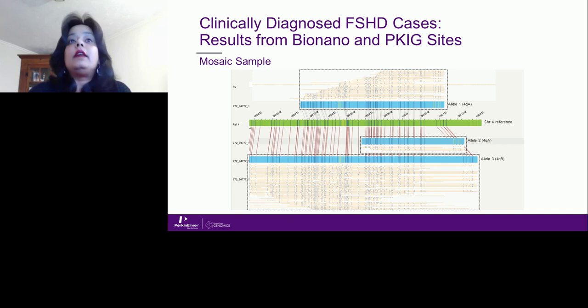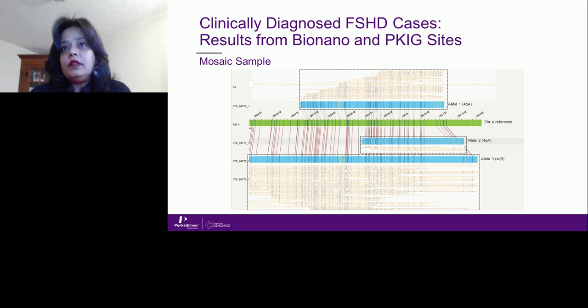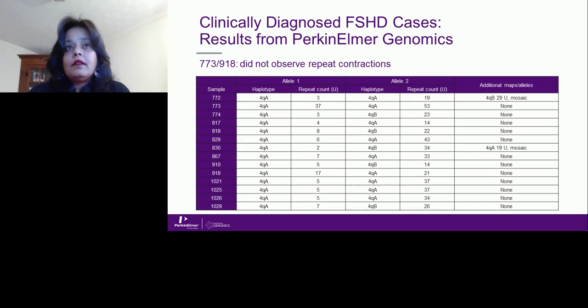Looking at the mosaic profile image, the green is the chromosome 4 reference. Three maps are visible: allele one at the top, allele two underneath the green reference, and allele three below. Allele one and allele two both show the 4QA haplotype with repeat contraction visible above and the regular non-repeated region below the chromosome 4 reference. The third allele looks like 4QB. We are doing additional studies to confirm this mosaicism.